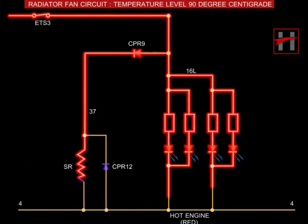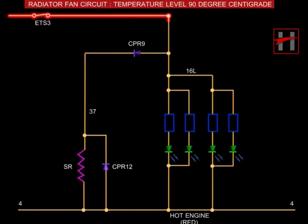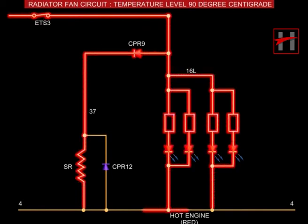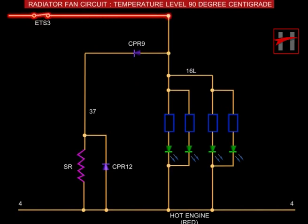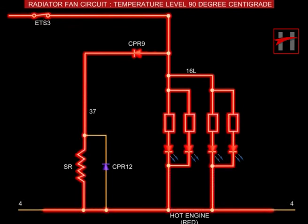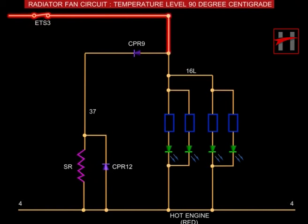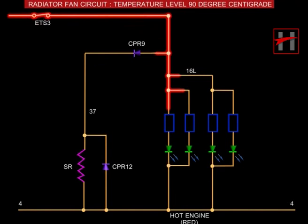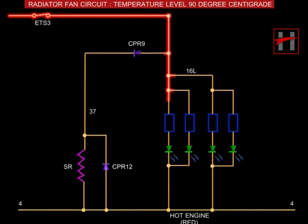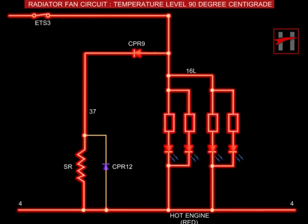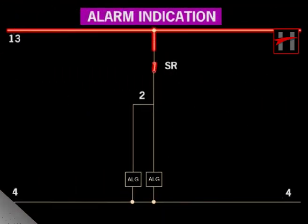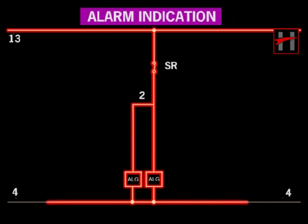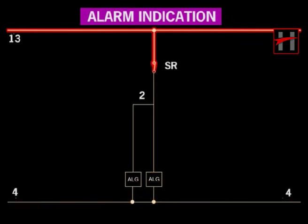When the water temperature reaches 90 degrees centigrade, ETS-3 closes, resulting in alarm and LED indication in the driver's cabin in the engine start condition. In case of LED indication, the current from cable number 71 flows through ETS-3, 16L, LED, and completes its path with cable number 4. In case of the audio alarm, the current flows through CPR, cable number 37, energizing the signal relay SR; the SR interlock closes and current from cable number 13 flows through cable number 2, energizes the alarm bell, and completes the path with cable number 4.